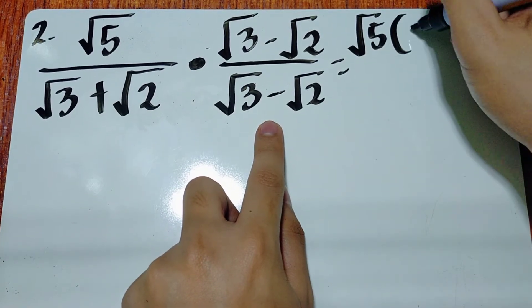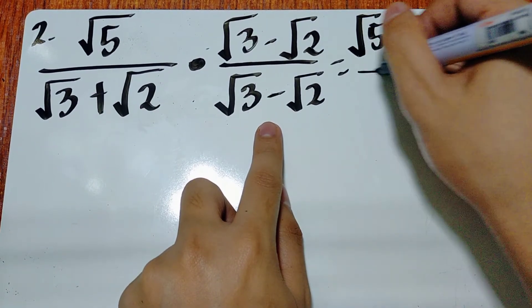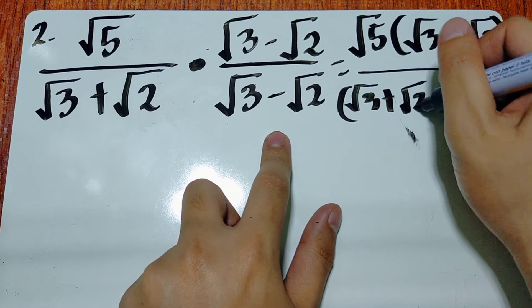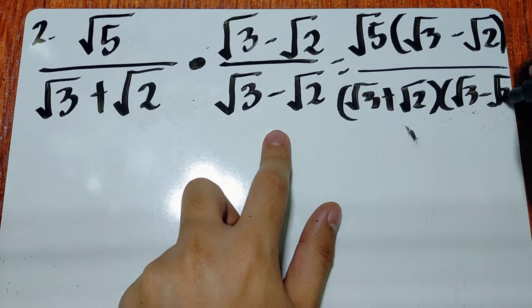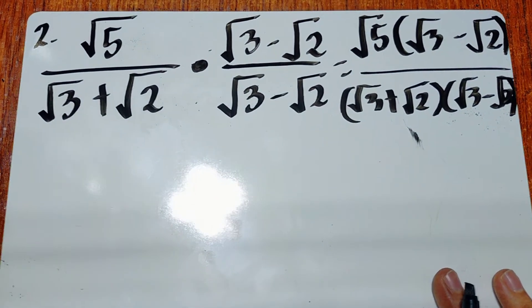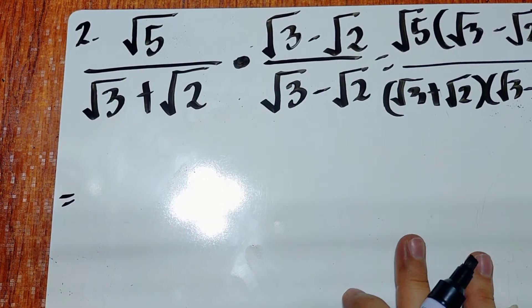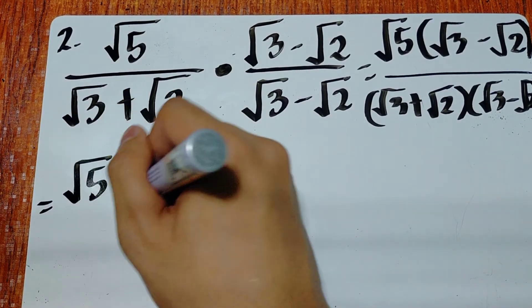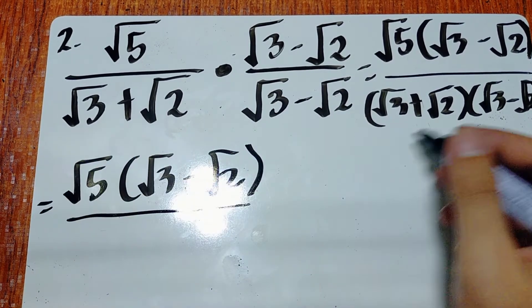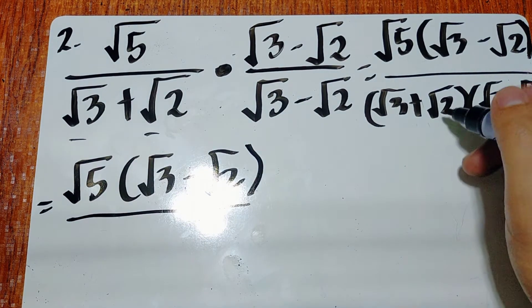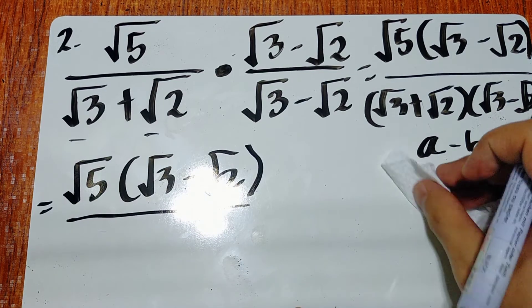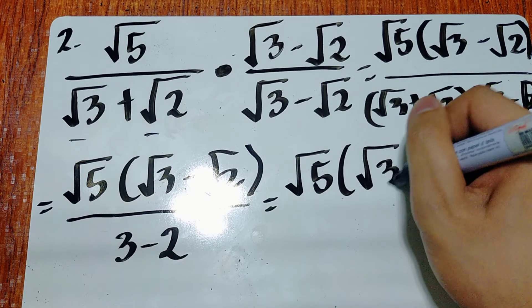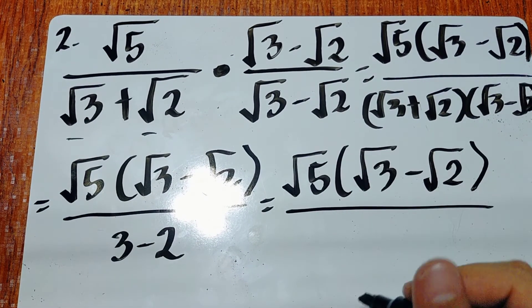Multiply: square root of 5 times the quantity (square root of 3 minus square root of 2), over square root of 3 plus square root of 2 times the quantity (square root of 3 minus square root of 2). Since both terms in the denominator have radicals, the answer is a minus b, which is 3 minus 2. That equals 1. So the denominator becomes 1, and we don't need to write 'over 1.'